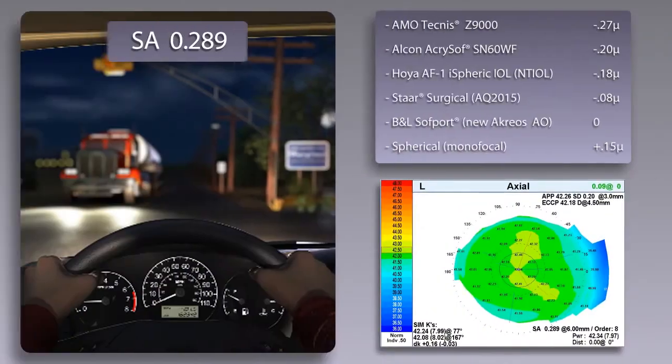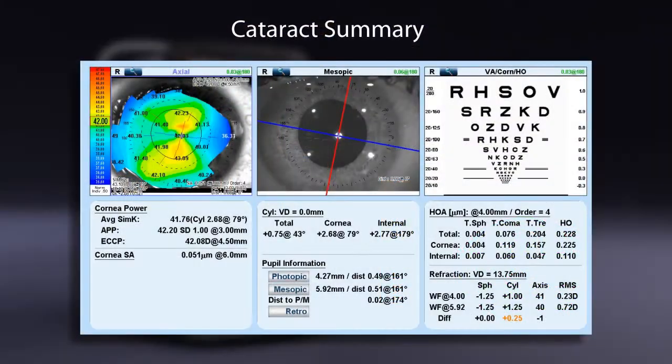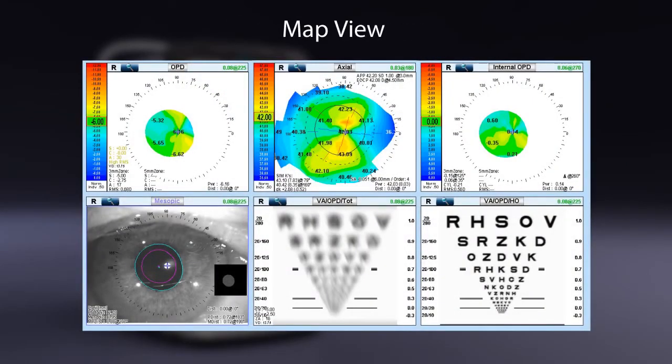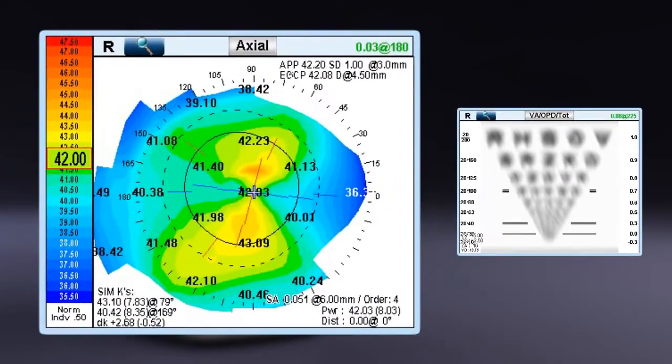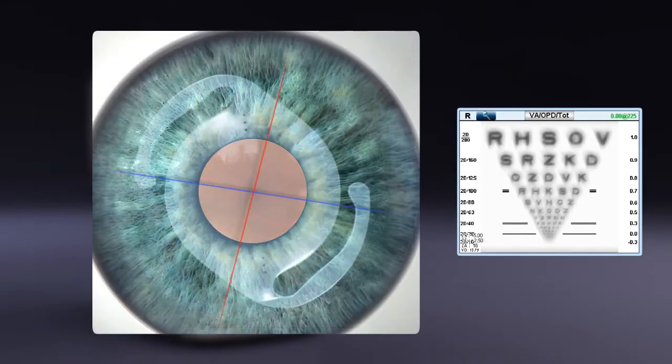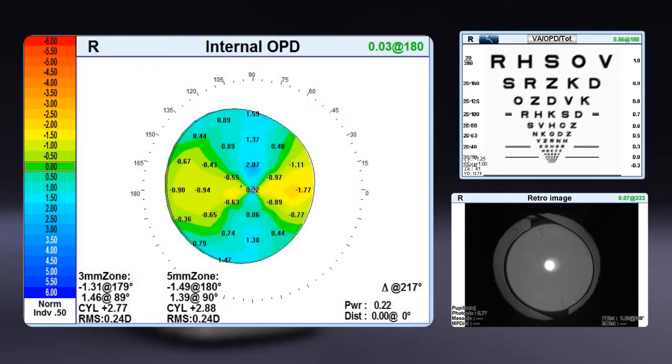IOL applications include spherical aberration of the cornea for aspheric IOL selection. Cataract summary displays any high-order aberrations that may remain after the cataract is extracted. Map view shows pre-op measurement with the ability to display the post-op measurements showing the correction along with the markings of the toric IOL in the retroillumination image and lens placement with the internal OPD map.